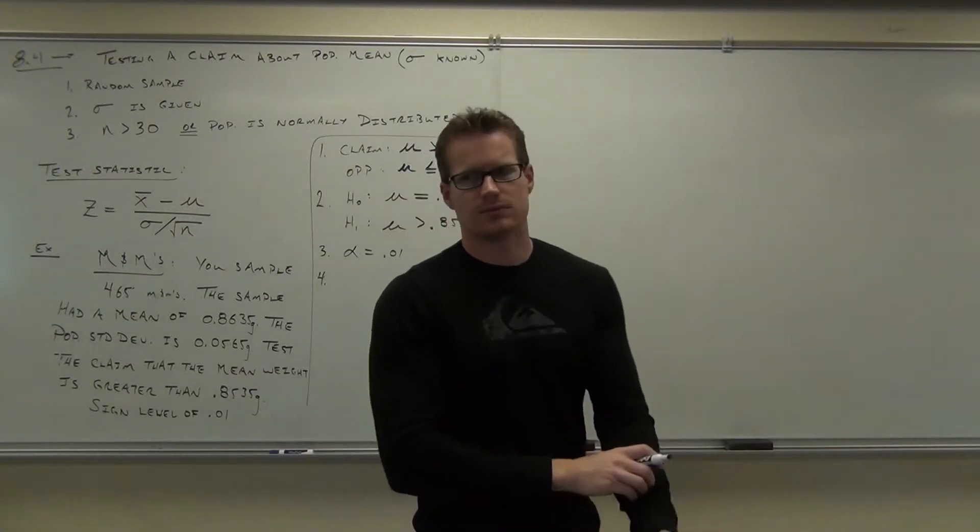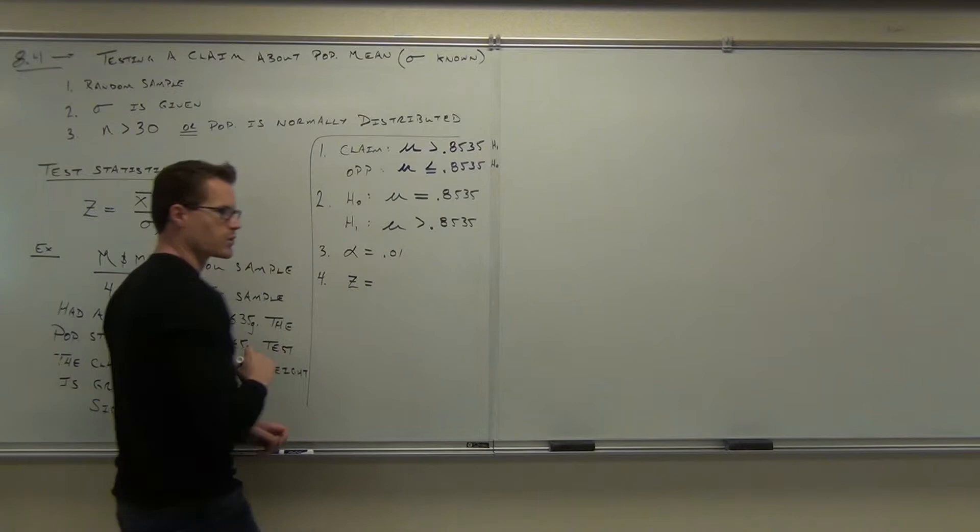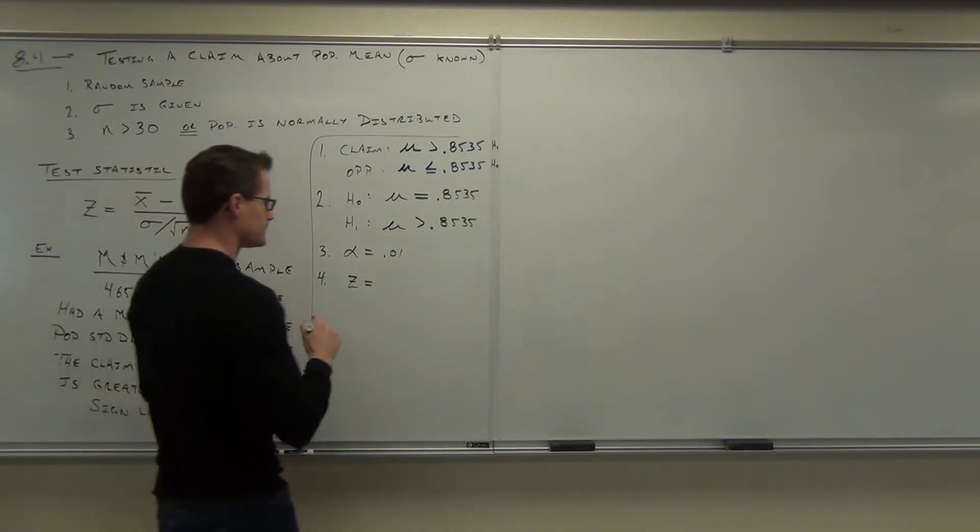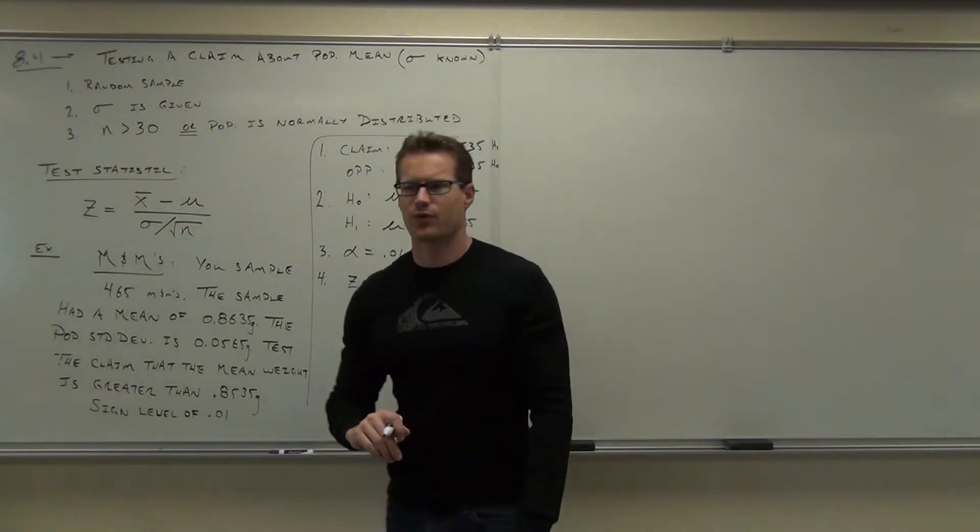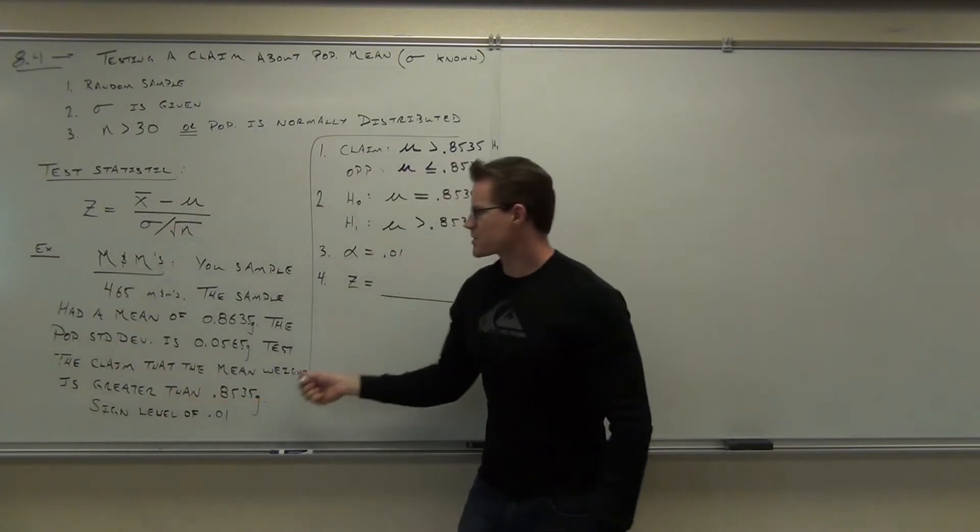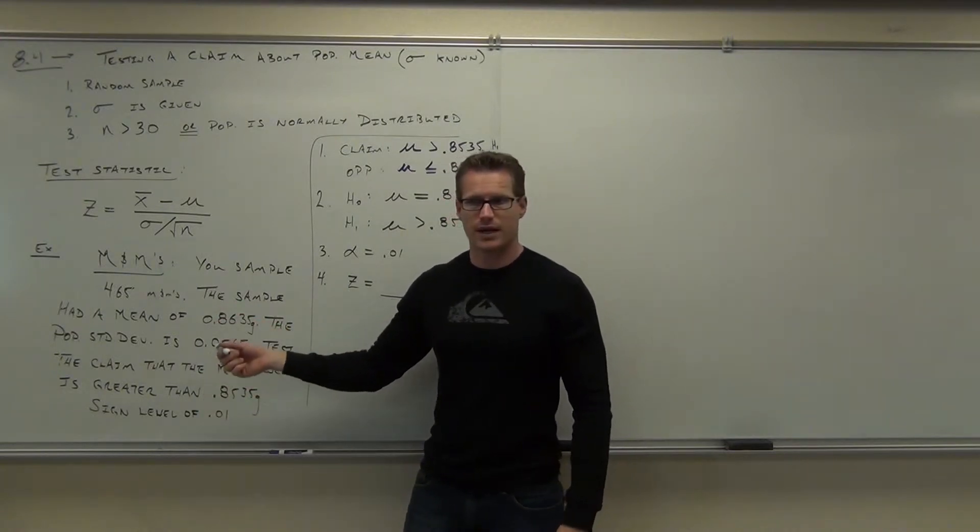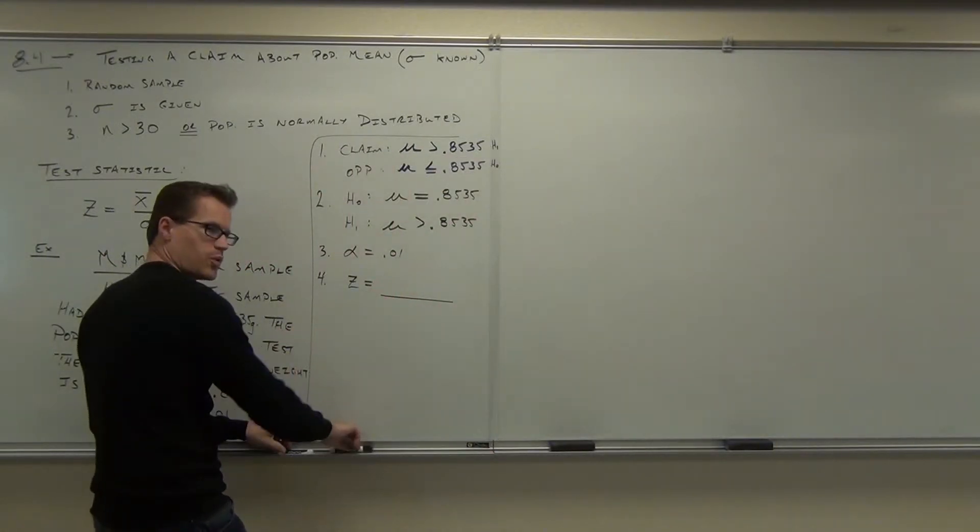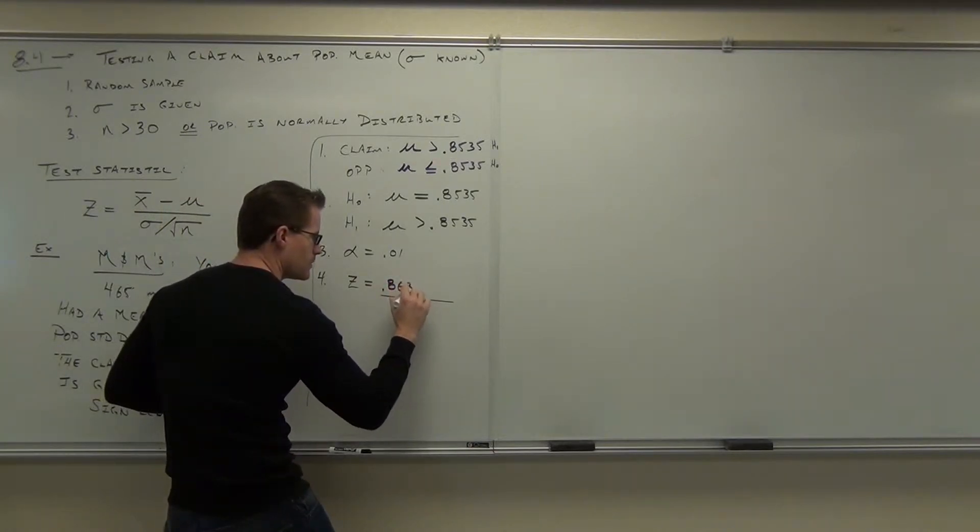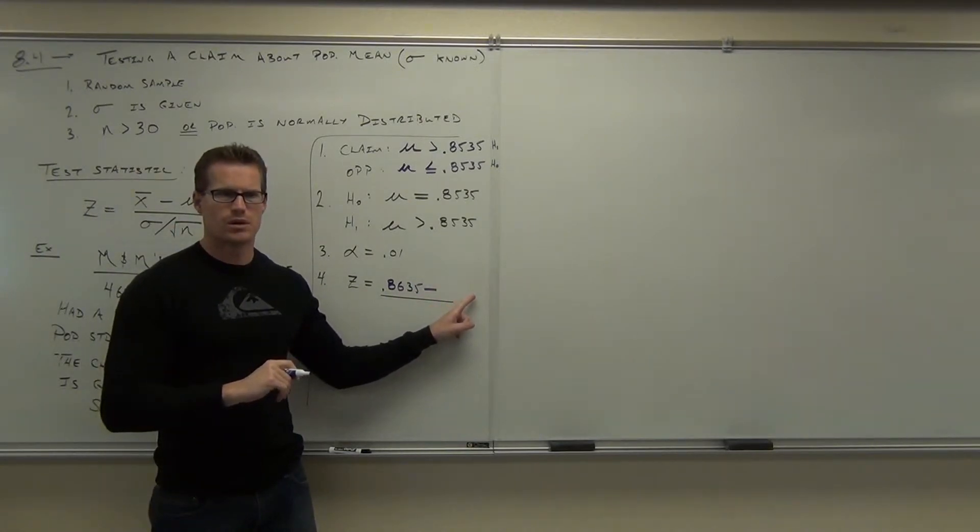Step four is the only place you do math. Other than this, you're going to look up numbers in a table and compare them. So step four, you're going to find your test statistic. We're using a z in this case because we know our sigma. So let's try to plug in numbers to our test statistic right here. Can you please tell me, what is our x bar in this case? Read through real careful. 0.8635 or 0.8535? 0.86. Why? This is from the sample.